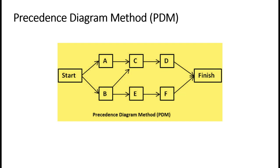When you create a PDM or a Precedence Diagram, there are a few things to keep in mind — this is where the technicality of project scheduling comes in. One of those is the types of task relationships. There are various forms of relationship, so let's see what forms of relationship exist between one task and another.